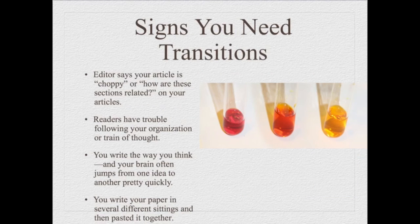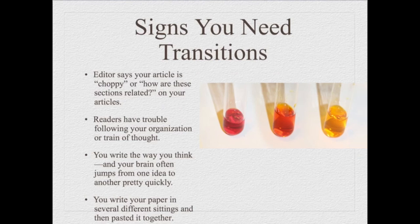Some signs that you need transitions in your story: your editor says your article's choppy, or anyone reading it says they're not sure how sections are related. If readers have trouble following your organization or train of thought, it's important to remember that we don't write the way we think. Our brains can go all over the place, but from a writing standpoint, we need to give our reader a logical path through the story. It doesn't have to be chronological, but it does have to make sense that each idea logically follows the one before it.